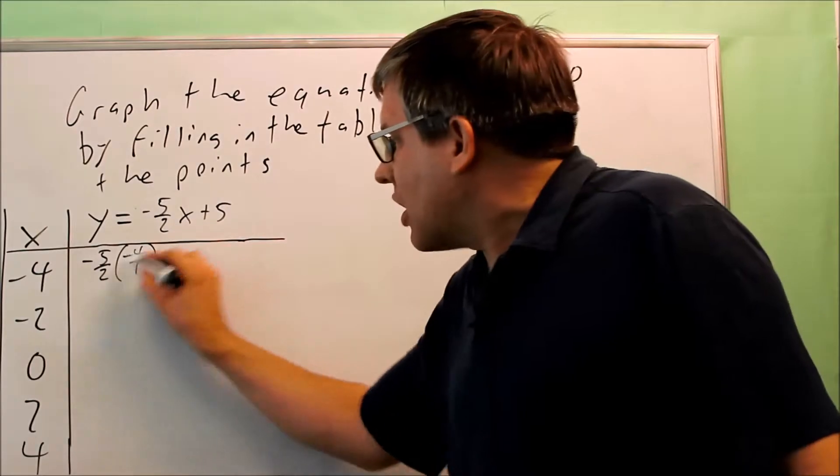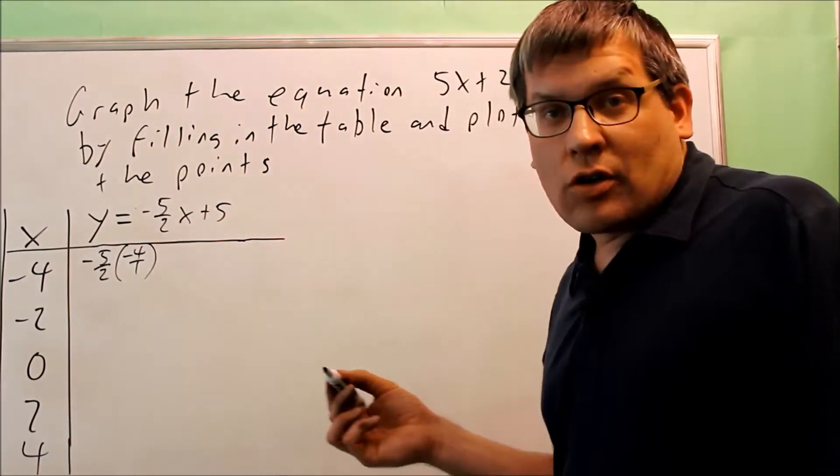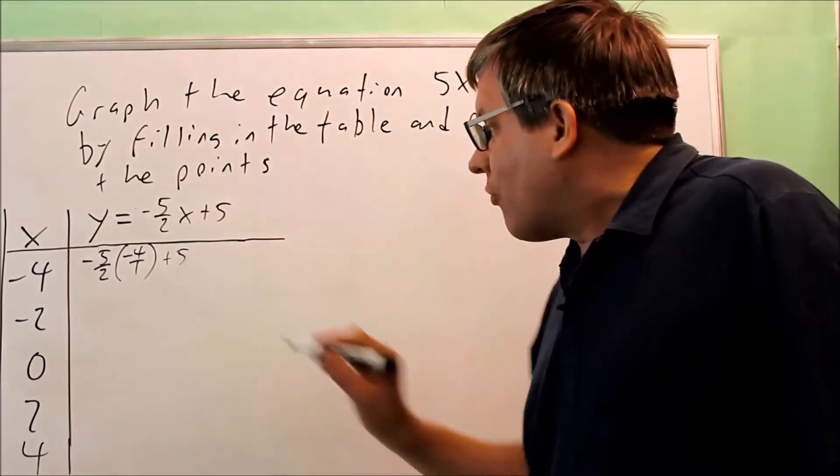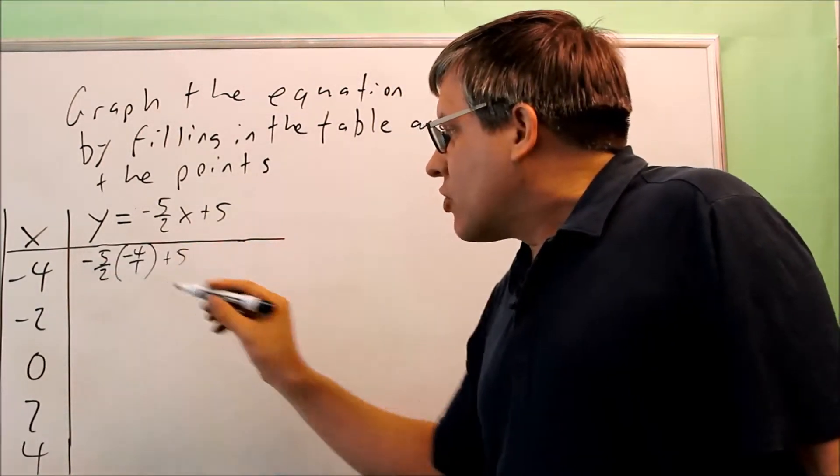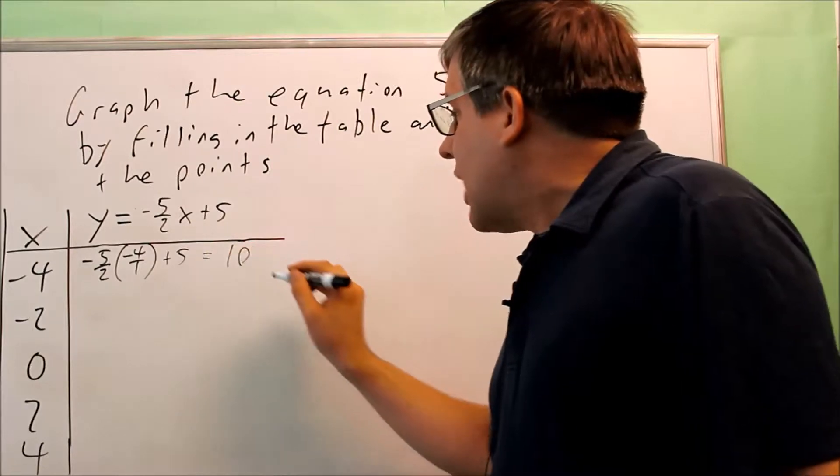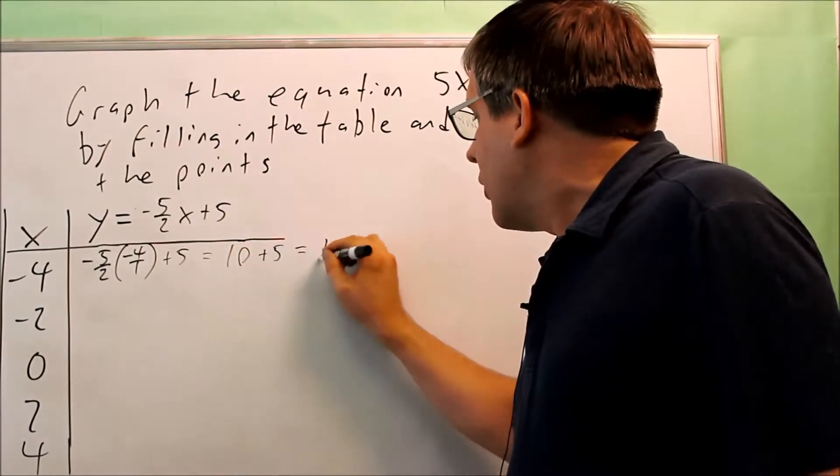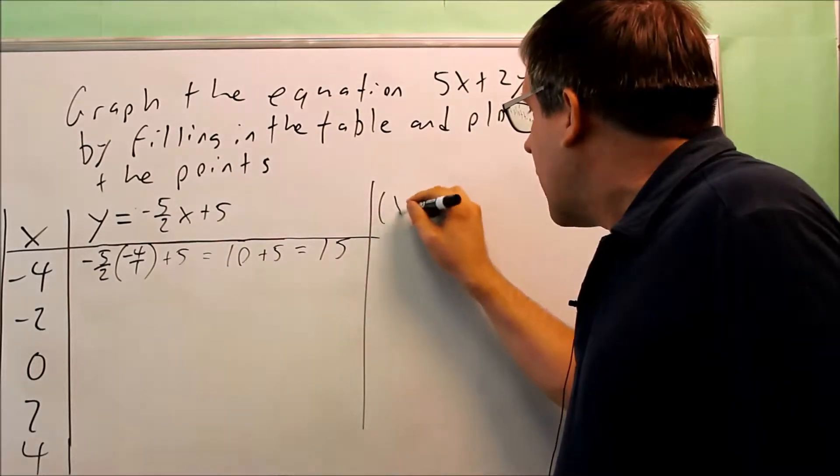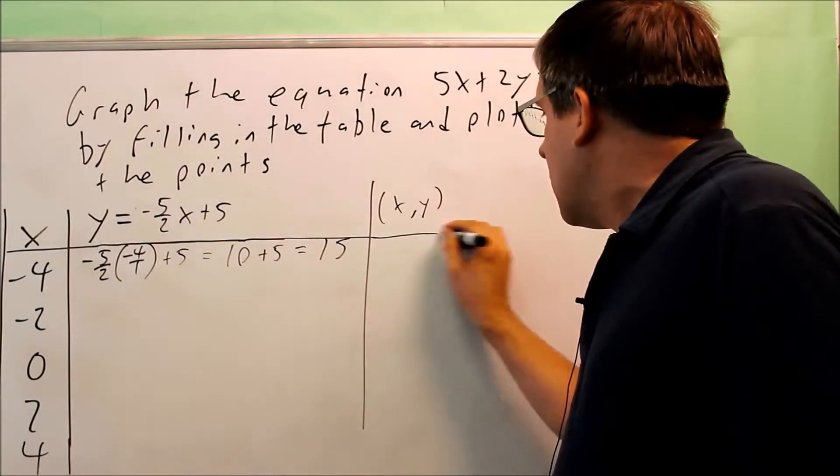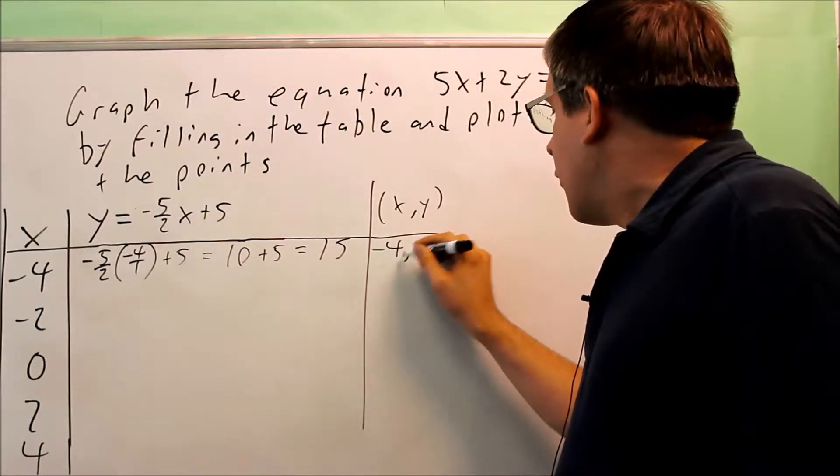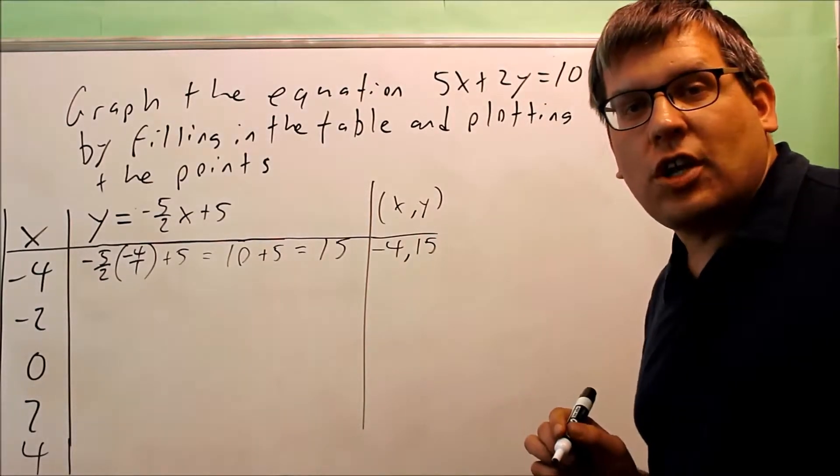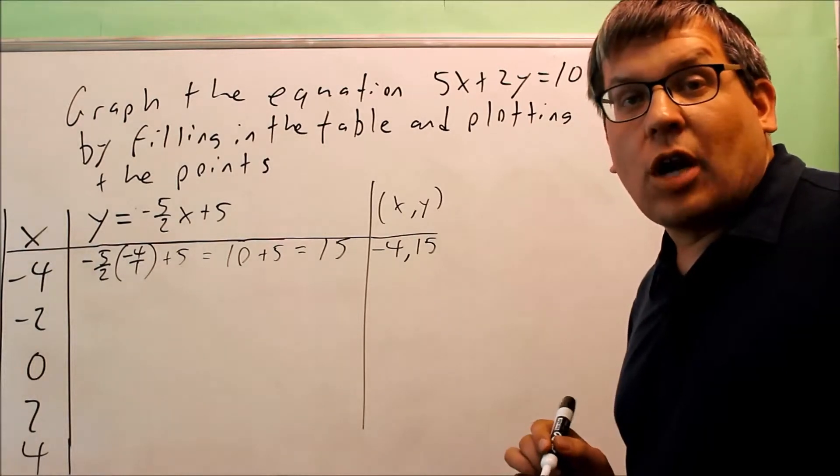Now you can either cross cancel or you can multiply across the top across the bottom. Once you're done with that, don't forget to add the 5. You get positive 20 over 2. That's going to give you positive 10 plus 5. That gives you 15. So I'm going to make another column, x comma y. The x value was negative 4, I got a y value of 15, which means that negative 4, 15 is one of the points that's going to be on my line.